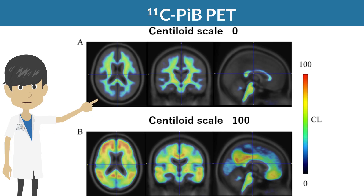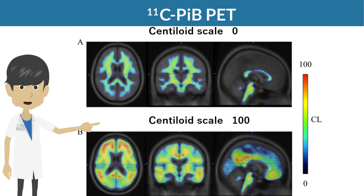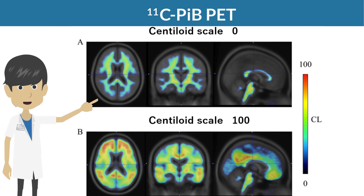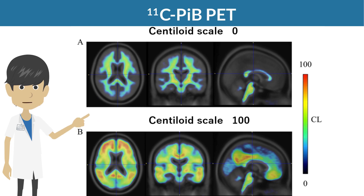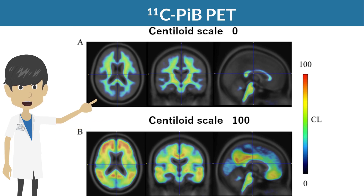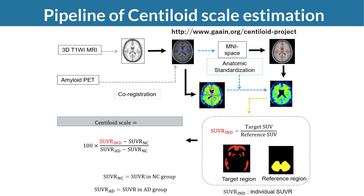You can see the difference between centiloid scale 0 and 100 amyloid PET images. In a centiloid scale 0 image, you cannot see any accumulation in gray matter. When estimating centiloid scale, you have to follow the method put forward by the Global Alzheimer's Association Interactive Network (GAAIN).